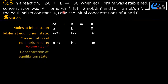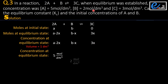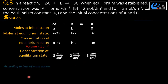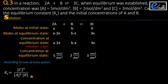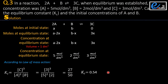The concentrations at equilibrium are already given: A is 5 moles per dm³, B is 2 moles per dm³, and C is 3 moles per dm³. Applying the formula according to the law of mass action, we calculate Kc equals 0.54. This Kc has no unit. This completes the first part of the question.